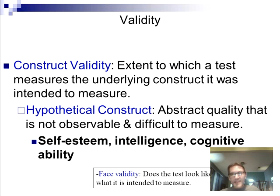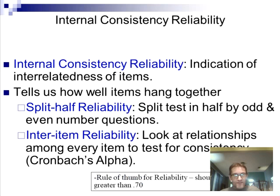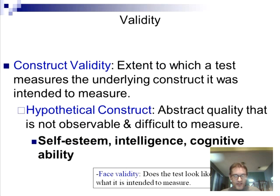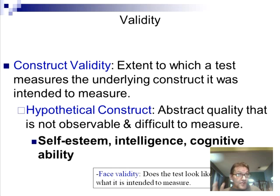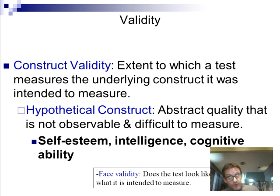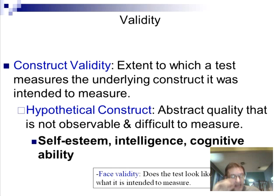Now, validity. Validity is the degree to which your measure reflects truth. Reliability was the degree to which you measure the same thing over and over. Validity is the degree to which you are measuring the truth — because just because you're measuring the same thing over and over does not mean you're measuring the truth. That's a pretty critical idea.